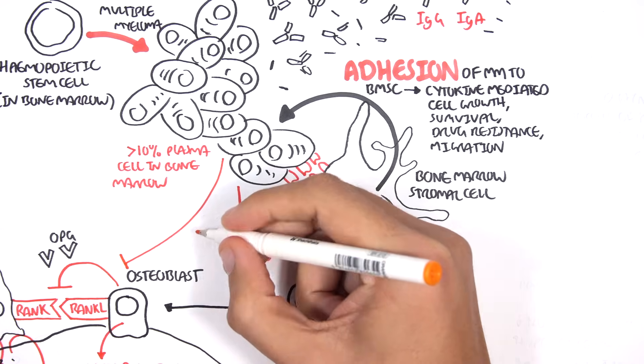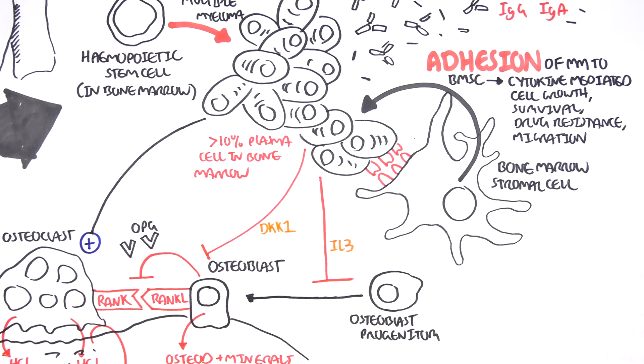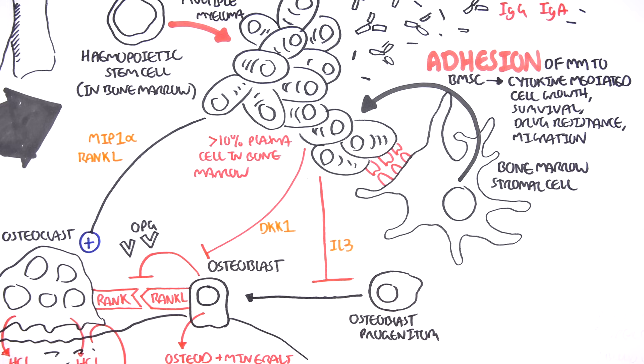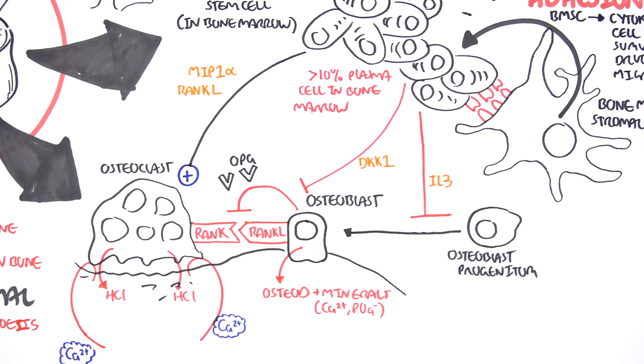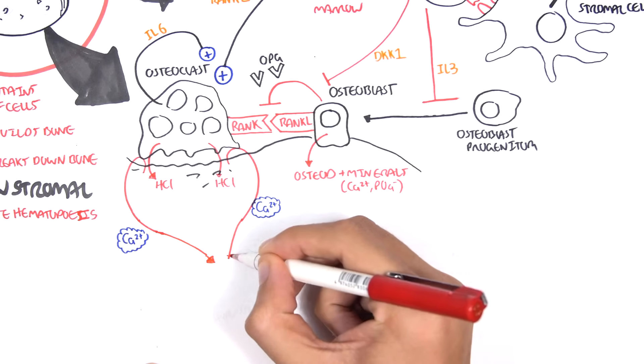The multiple myeloma cells also secrete DKK1, which inhibit OPG production by osteoblasts, thus resulting in an increase in osteoclastic activity. Multiple myeloma cells also stimulate osteoclastic activity through MIP1-alpha and through expression of RANK ligand. The osteoclast can self-stimulate itself and the multiple myeloma and the bone marrow stromal cells through interleukin-6. This whole picture shows an amplification of multiple myeloma cells, osteoclastic activity and a decrease in osteoblastic activity. So osteoclastic activity is basically promoted and osteoblastic activity is reduced.